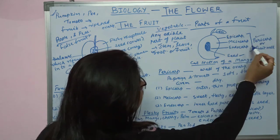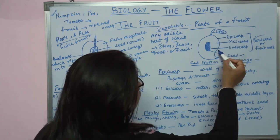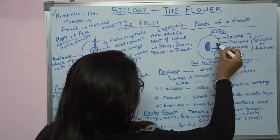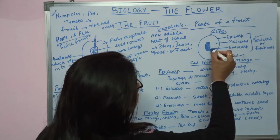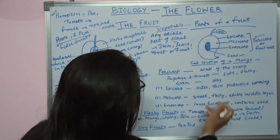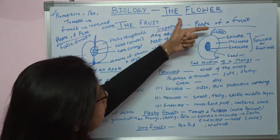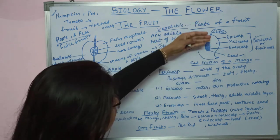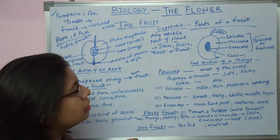The pericarp has three parts: the epicarp, which is the outermost; the mesocarp, the middle one, which is fleshy; and the endocarp, which is the hard one that covers the seed inside. This is the cut section of a mango. In the mango fruit, you can see the four parts of a fruit very clearly.